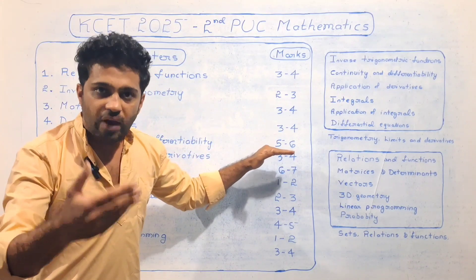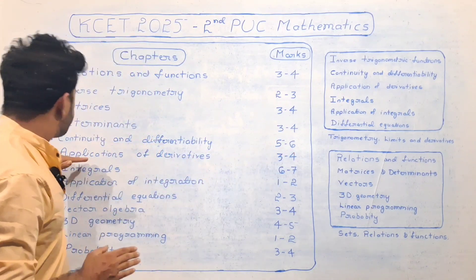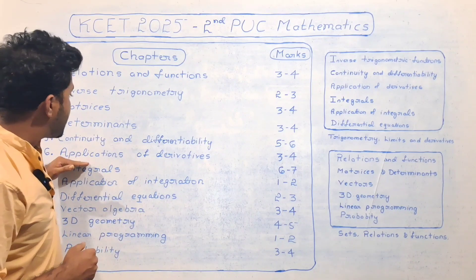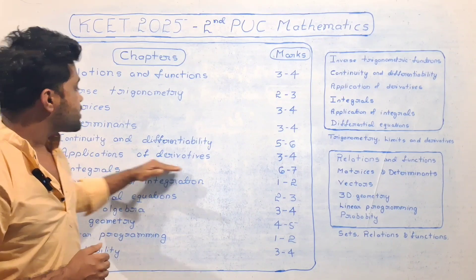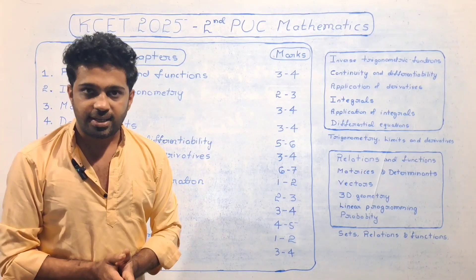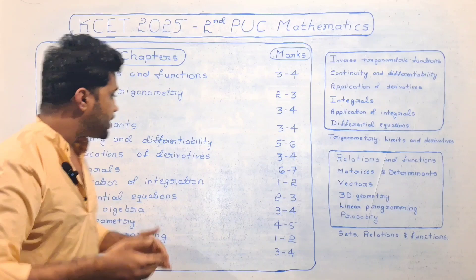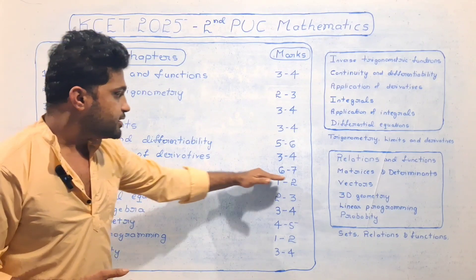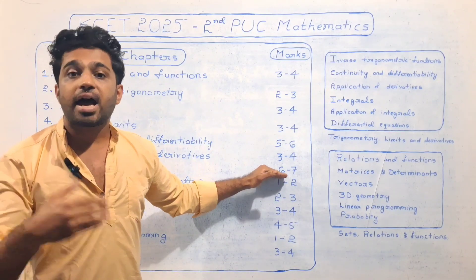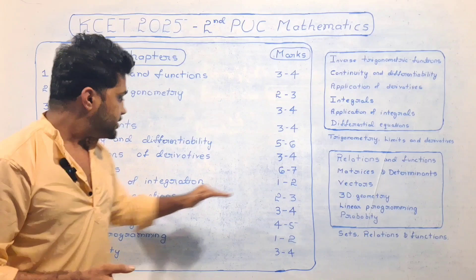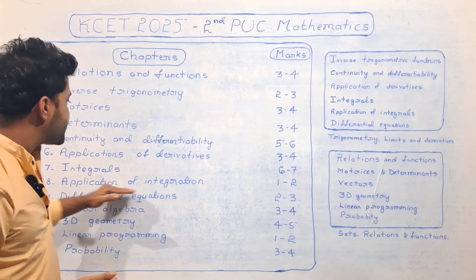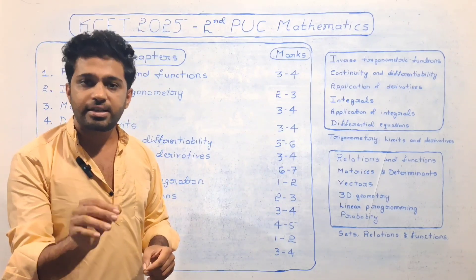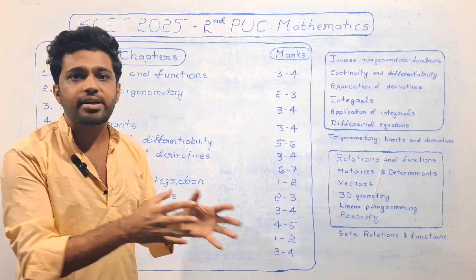Continuity and Differentiability carries 5 to 6 marks — it has the highest weightage, so you need to cover it thoroughly. Application of Derivatives carries 3 to 4 marks. Integrals carries 6 to 7 marks with the highest weightage. Application of Integration — these are 2 interlinked chapters together carrying about 7 marks, so they are related and need to be studied together.